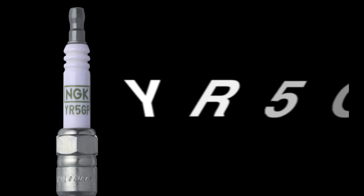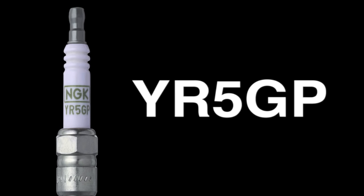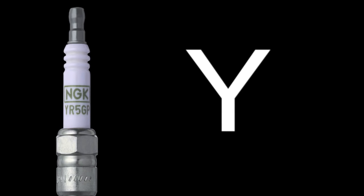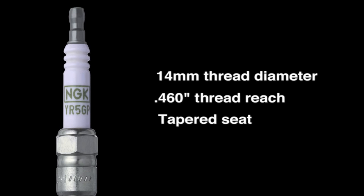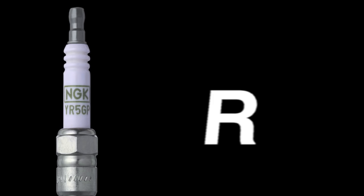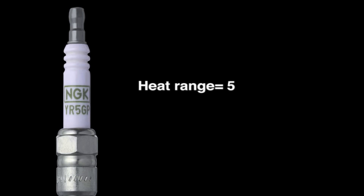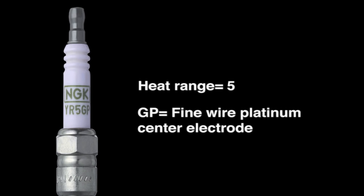For example, the part number YR5GP can be broken down as follows. Y represents 14mm thread diameter, .460 thread reach, tapered seat, non-projected. R represents resistor, 5 represents heat range, and GP represents fine wire platinum center electrode.